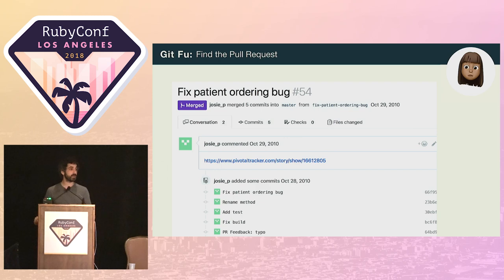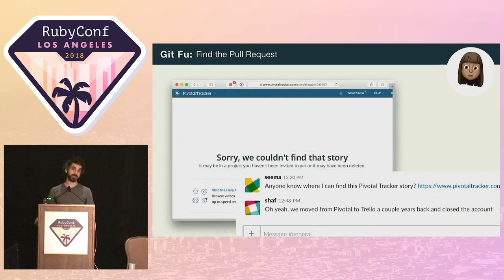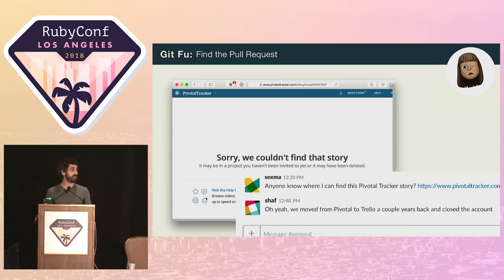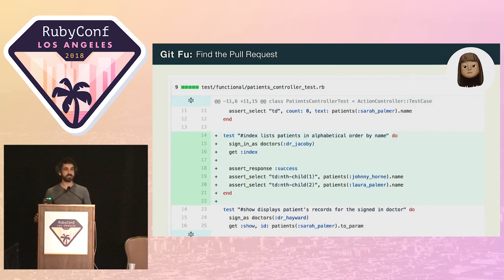Seema's hope had been that the description would give her a bit more context for the change, but all she sees is a link to Pivotal Tracker. She wasn't aware that the company used Pivotal Tracker, so she asked a colleague how she might get access to the project. But it turns out the company archived the project when they switched to Trello, and when the subscription lapsed, so did access to the project.